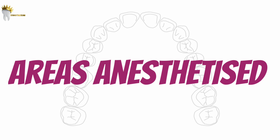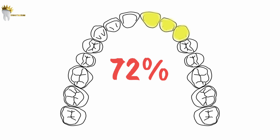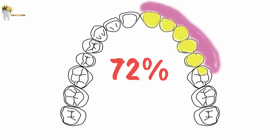With this nerve block, the pulps of the maxillary central incisor, lateral incisor, and canine on the injected side are anesthetized. Along with these teeth, in 72% of patients, the pulps of the maxillary premolars and the mesiobuccal root of the maxillary first molar, and the buccal periodontium of these teeth, are also anesthetized — because this is the area supplied by the middle superior alveolar nerve.